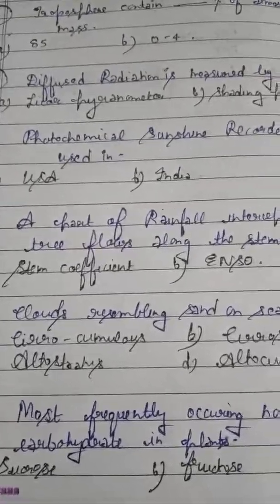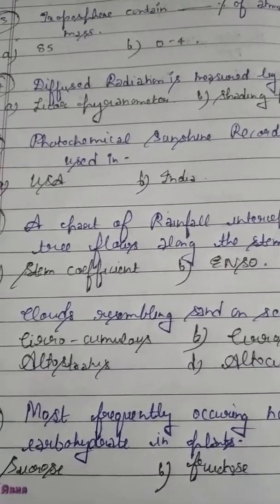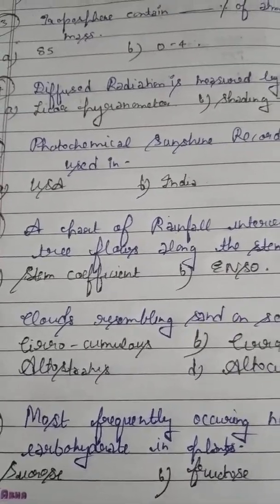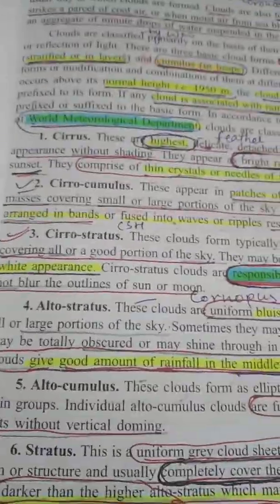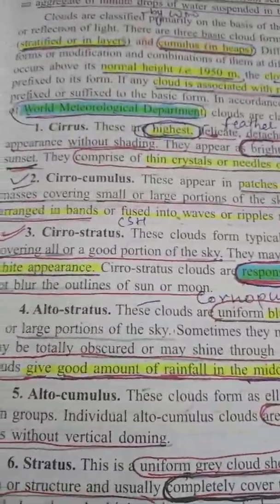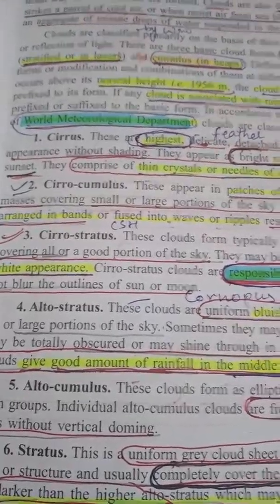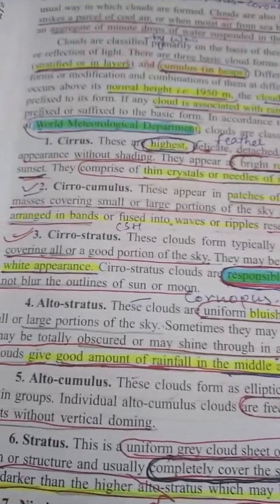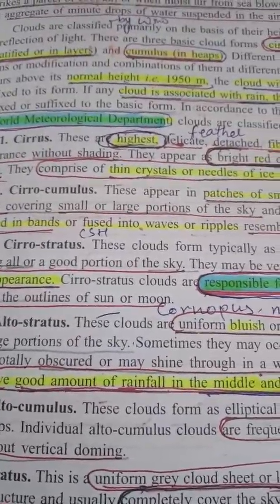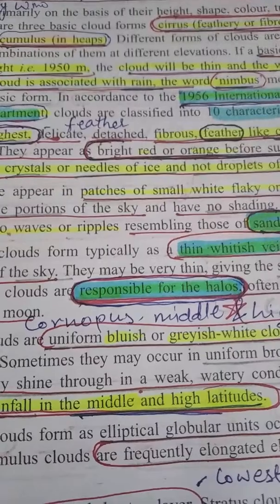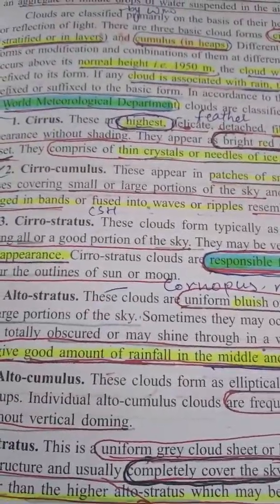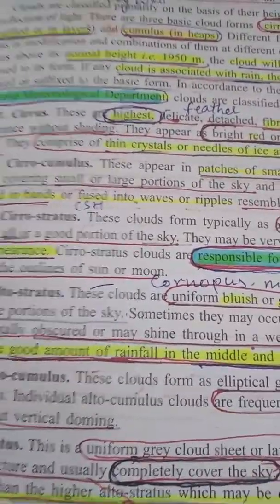Question number 5: Photochemical sunshine recorder is used in which country? Option A: USA. Option B: India. Please remember — in India we use the Campbell-Stokes sunshine recorder, and in USA we use the photochemical sunshine recorder. In India: Campbell-Stokes. In USA: photochemical sunshine recorder.